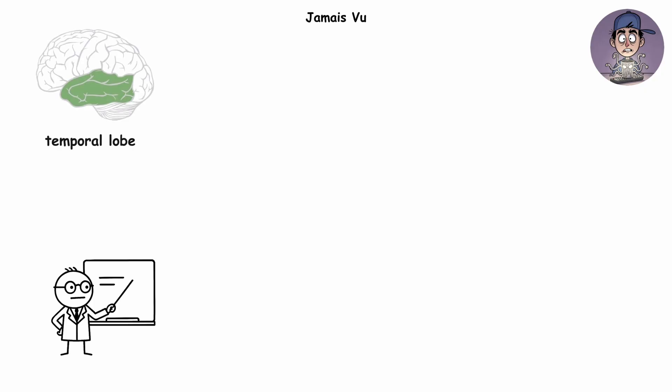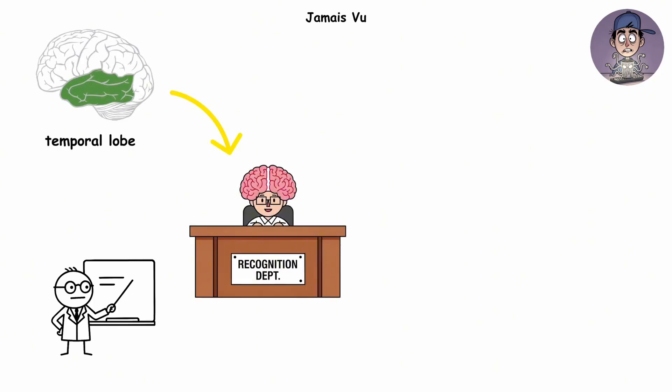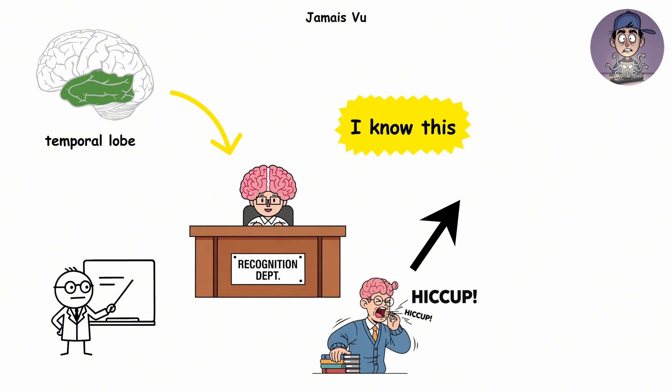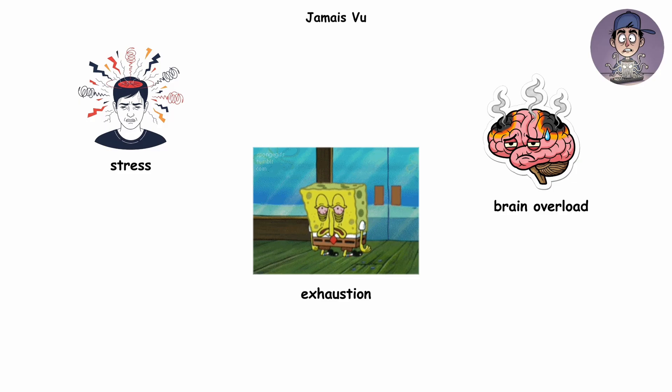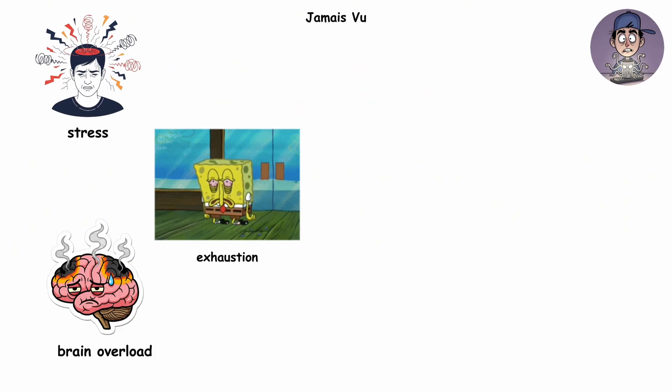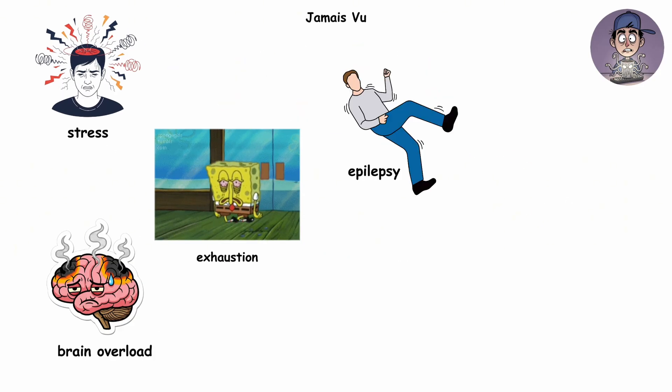Scientists trace this to the temporal lobe, the recognition department of your brain. If it hiccups, the link between I know this and I see this doesn't connect. Stress, exhaustion, or brain overload make this more likely. In rare cases, people with epilepsy even report it before seizures.